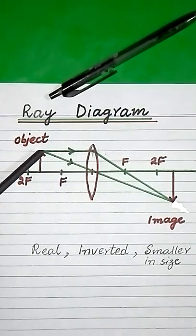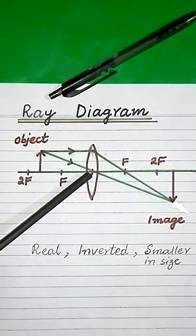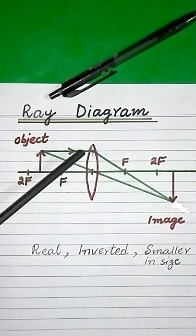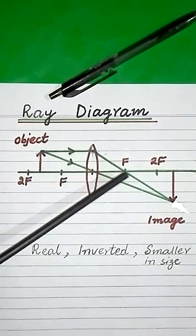So we take first ray coming from object and this ray is parallel to principal axis of convex lens. This ray after refraction from lens passes through its principal focus.